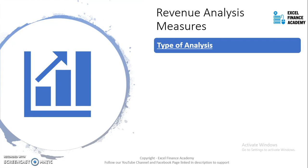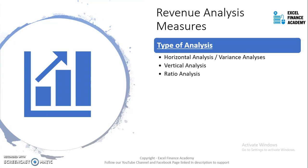There are three types of analysis that are normally performed in the hospitality industry, or in any industry. It is done step by step. The first step is horizontal analysis, where we are comparing one period to another period. The second type of analysis is vertical analysis. The third type of analysis is ratio analysis. We will be looking at the meanings of these three terms now.